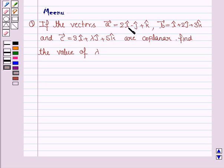If the vectors A = 2i cap minus j cap plus k cap, vector B = i cap plus 2j cap minus 3k cap, and vector C = 3i cap plus lambda j cap plus 5k cap are coplanar, find the value of lambda. So let's now move on to the solution.